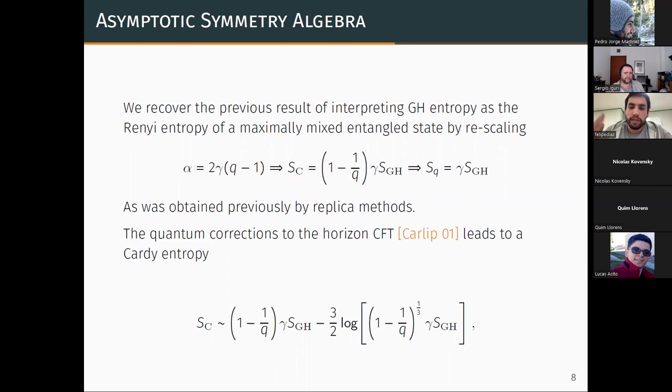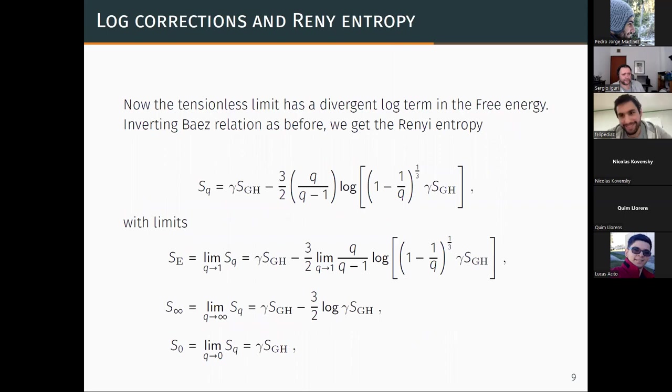The central charge actually reproduces the Gibbons-Hawking entropy up to a free parameter. If you put these three parameters satisfying the Renyi entropy computation to be constant, and then you consider quantum corrections to the horizon CFT, you get this entropy which diverges when q goes to one, which is the original De Sitter space.